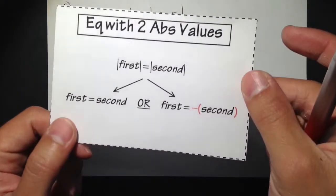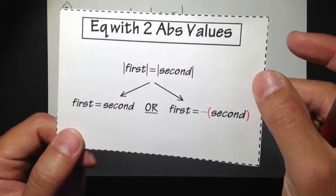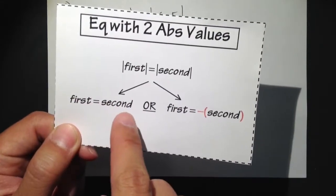Example number two, when we have two absolute values, so first is equal to second.